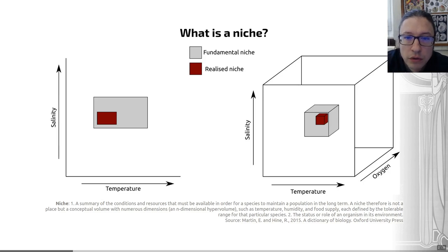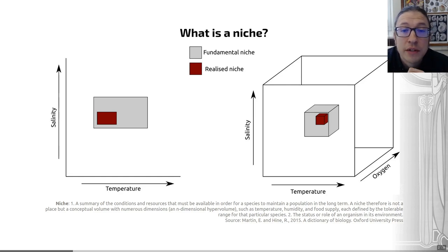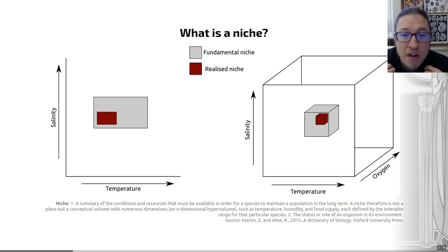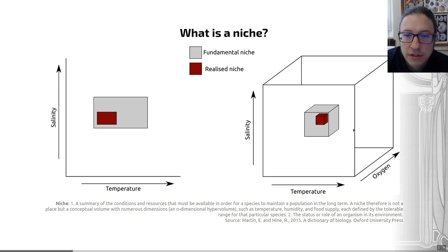The niche is not a place but a conceptual volume with numerous dimensions, including temperature, humidity, and food supply. In my two-dimensional diagram I've chosen salinity and temperature; in the three-dimensional diagram, salinity, temperature, and oxygen. Within this conceptual space, we can split it into the fundamental niche — the full portion of ecospace a species could potentially occupy — and the realized niche, which is the ecospace a species does actually occupy. This concept is formulated to encompass many more factors than shown here.